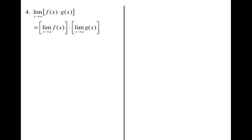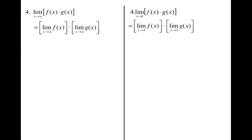The next limit law is the multiplication limit law. Basically, if we have two functions multiplied together, you can split them up, take the limit of each one separately, then multiply them together. Using our same examples, we can split them up — we know this limit is 4 and this limit is negative 1 — so plugging them in and simplifying, I get negative 4.